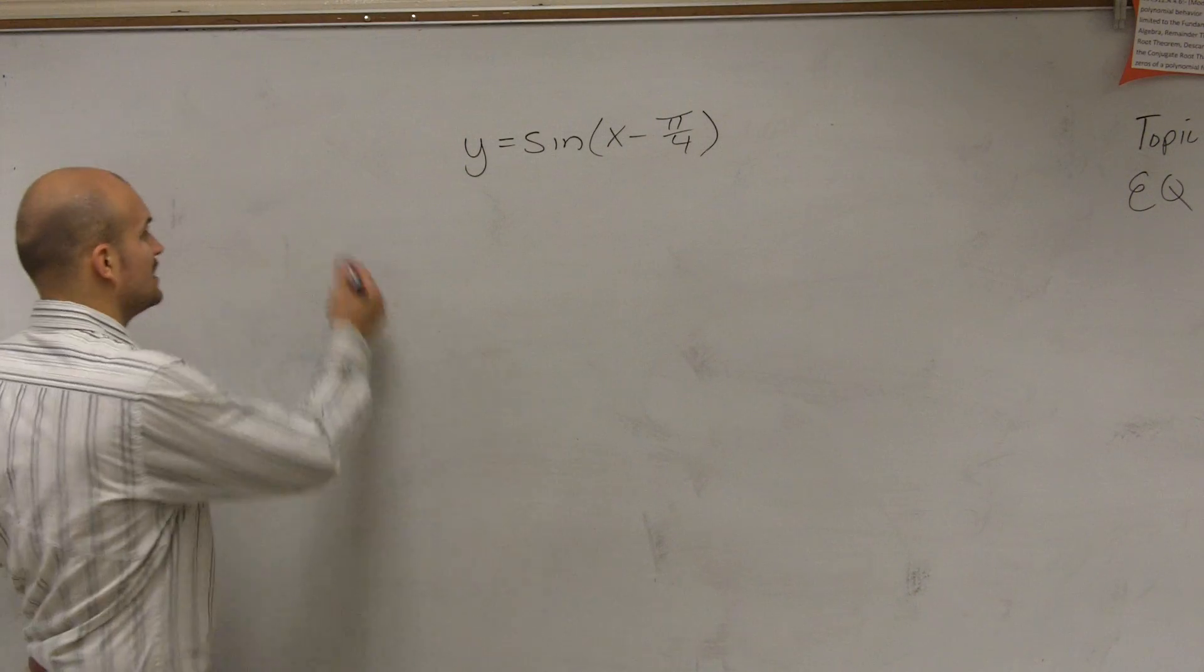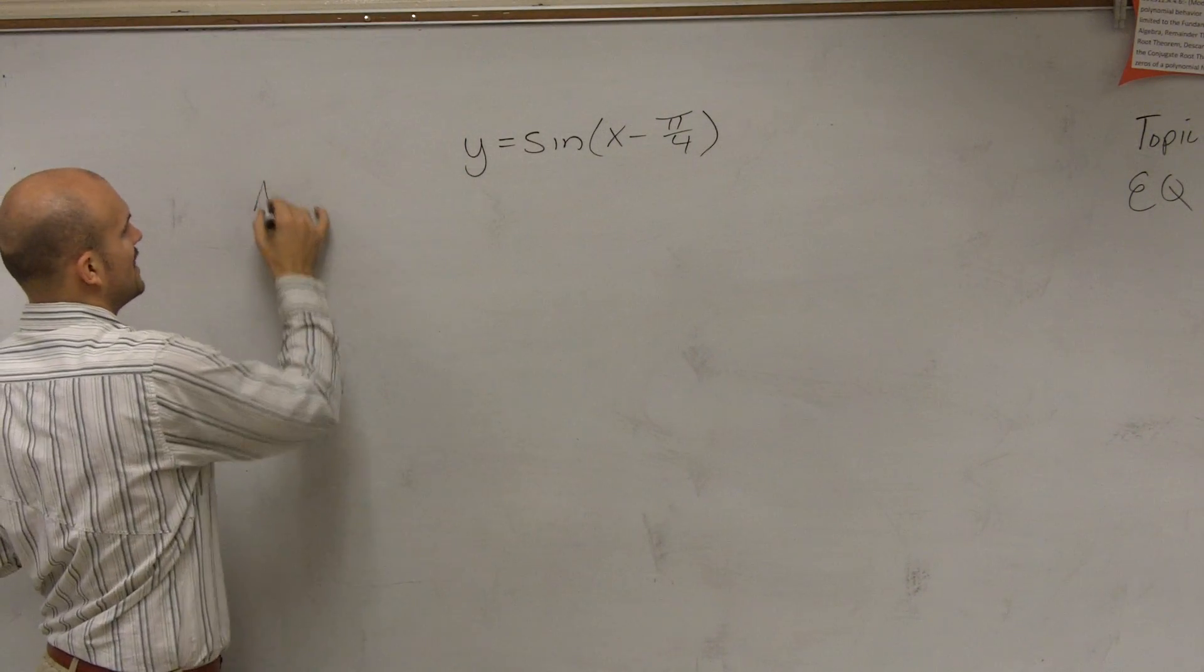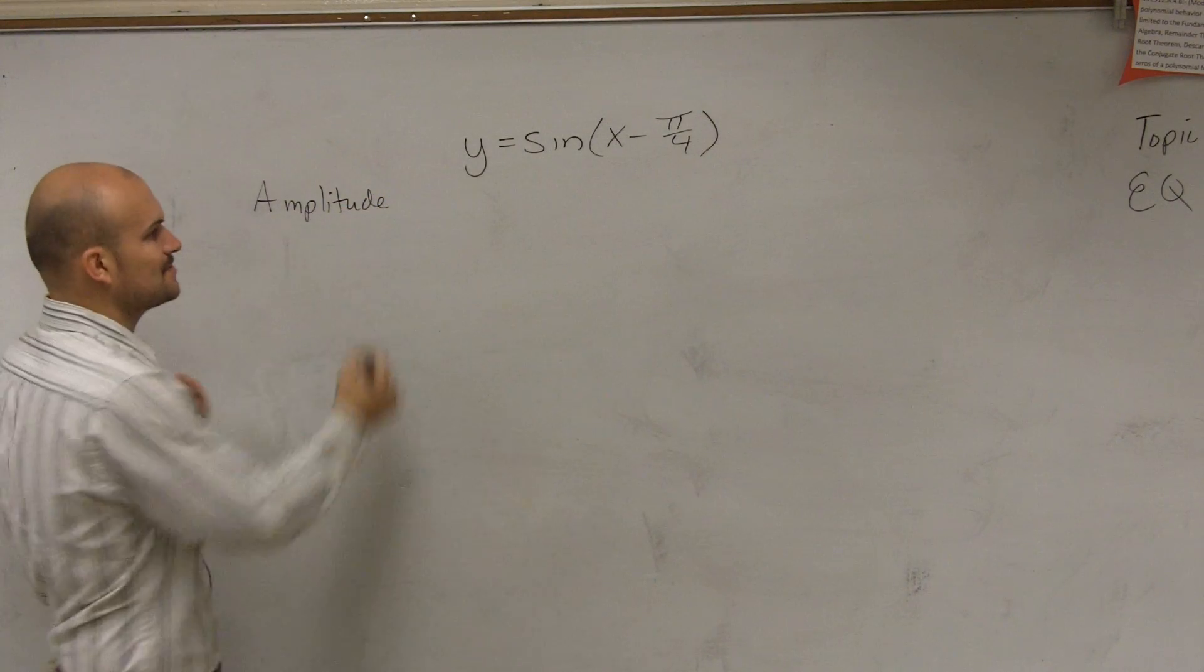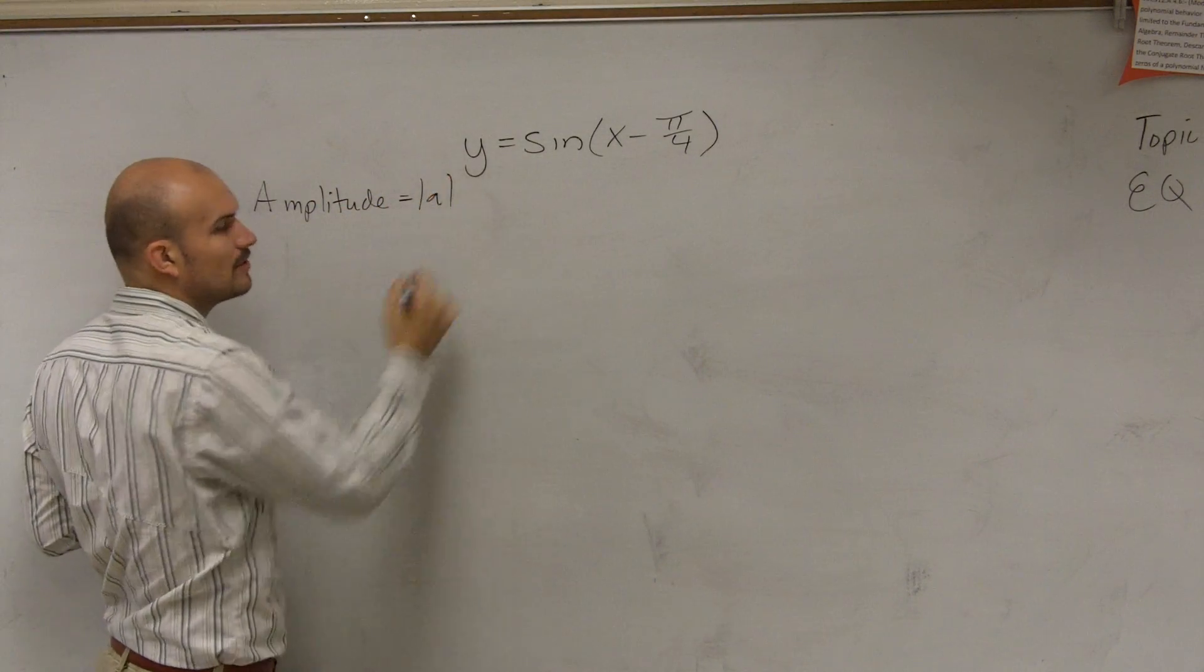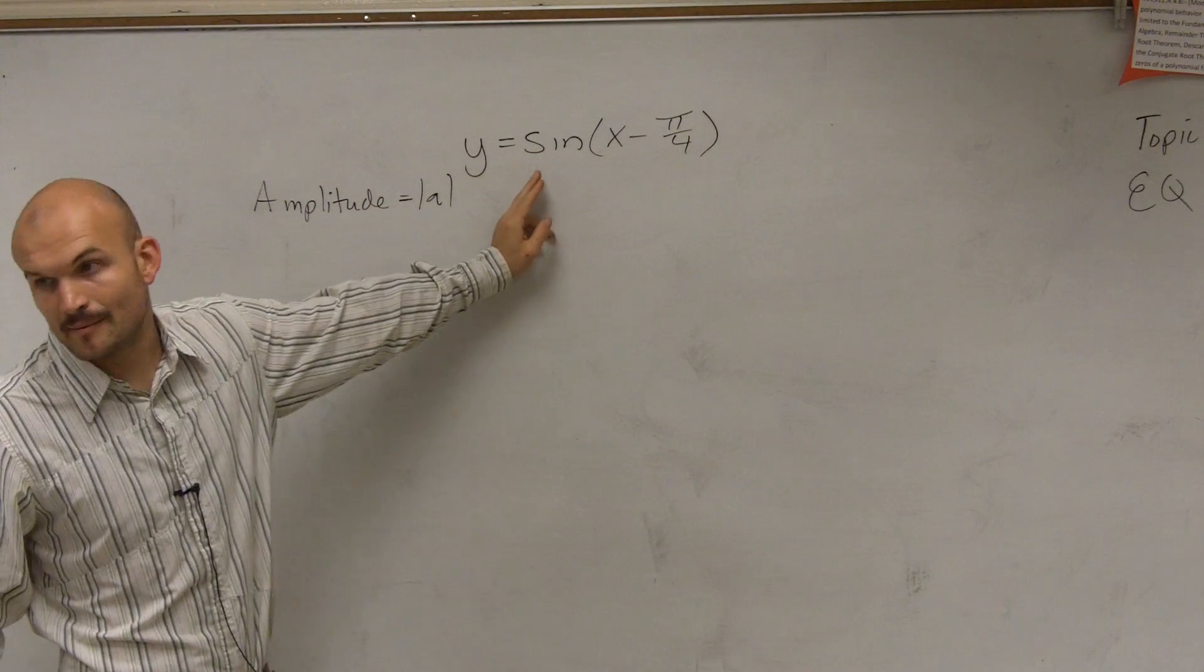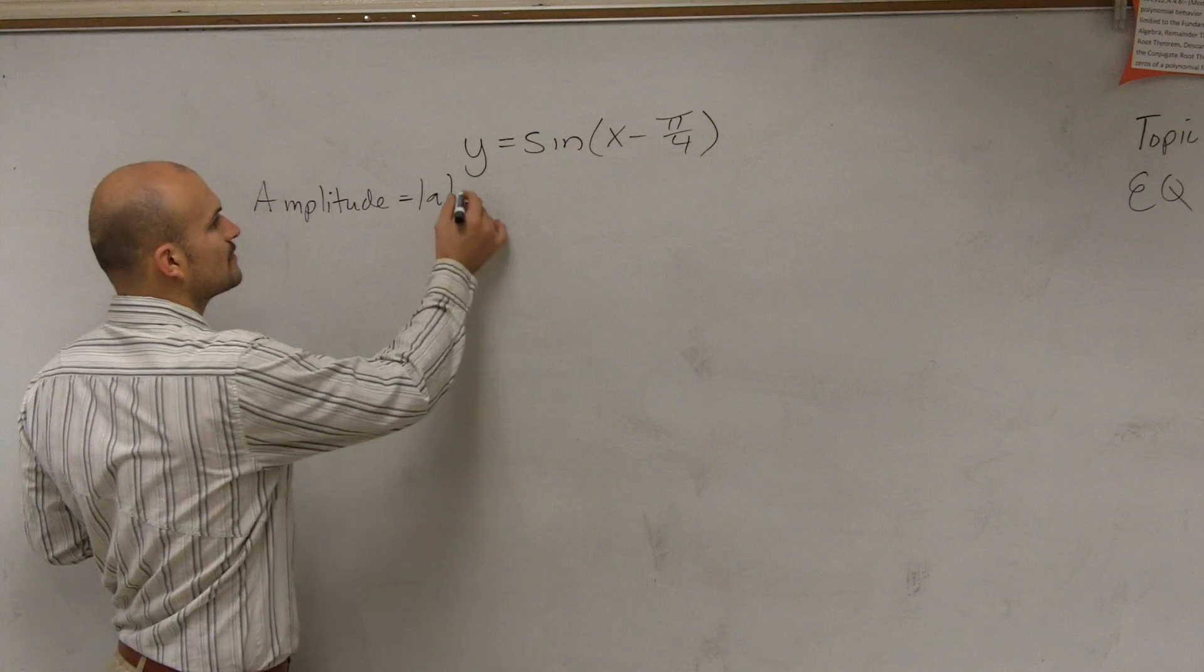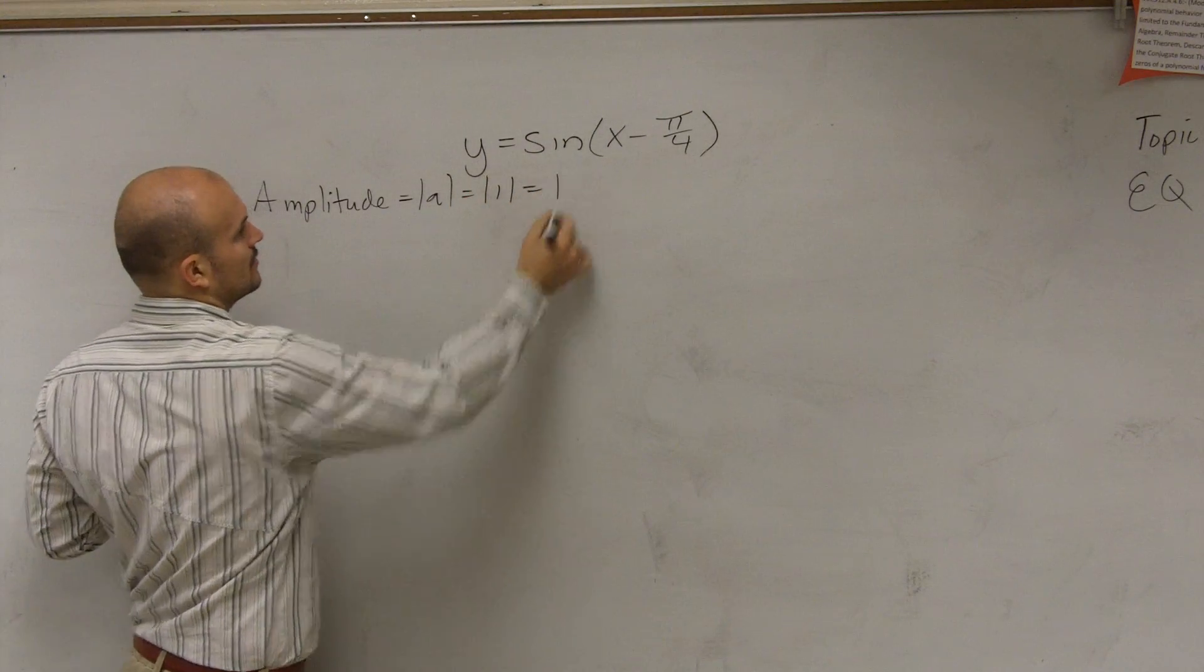So the first section is I need to find the amplitude. Remember, the amplitude is the absolute value of a. You have to know your vocabulary for this one. a, remember, is what's being multiplied by our function, which we can see is going to be 1. So absolute value of 1 equals 1.